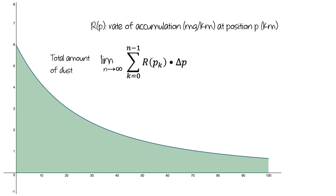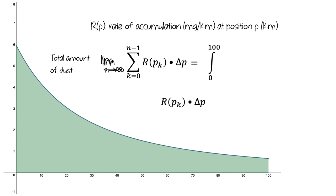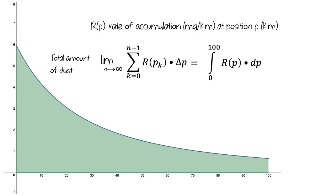There is another way to write this limit. We're letting the number of intervals in the Riemann sum go to infinity, and to show this, we turn the summation symbol into an elongated s. We write a 0 below and 100 above to show that we're adding up amounts of dust from 0 to 100 kilometers along the path. We're still multiplying the rate of accumulation by the length of the interval, but since we're looking at the limit as the number of intervals approaches infinity, we're no longer looking at a specific number of values of p, and the length of the intervals gets infinitesimally small, which we show by changing the delta into a d, like we did with derivatives. This limit, which we call a definite integral, is another way of writing the total amount of dust that would accumulate if you added up the amounts of dust that would accumulate at all of the infinitesimally narrow intervals between 0 and 100 kilometers along the rover's path.